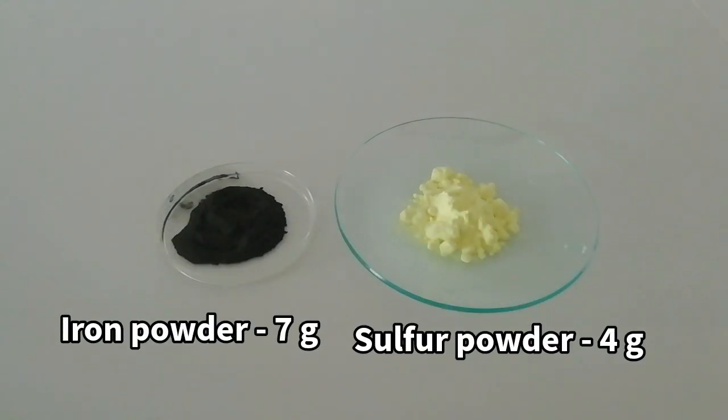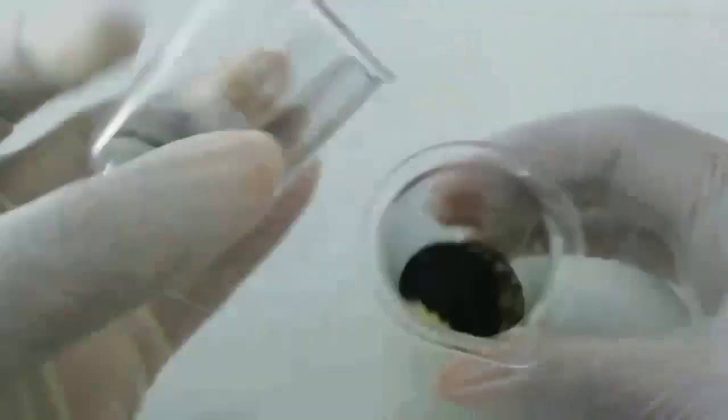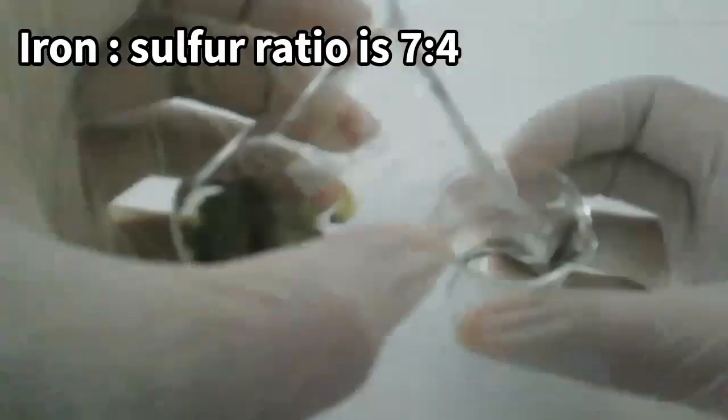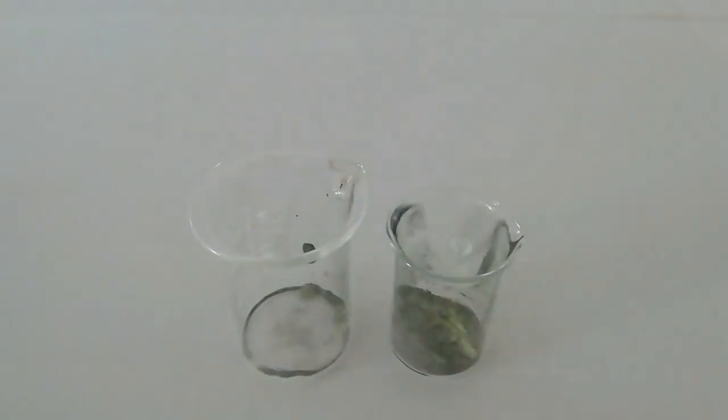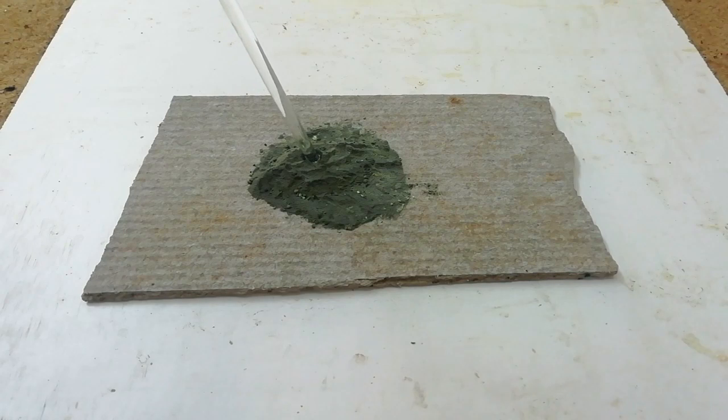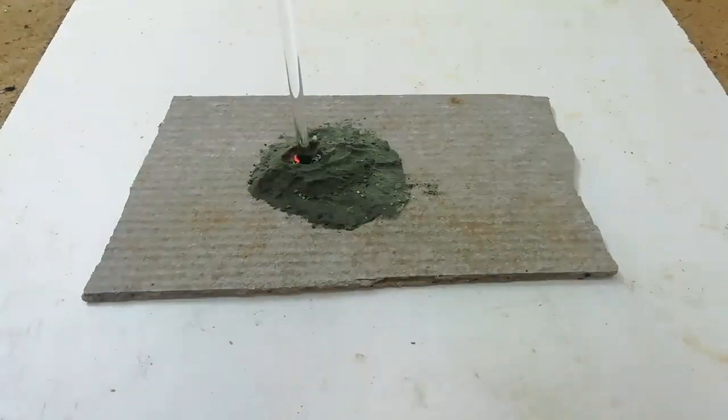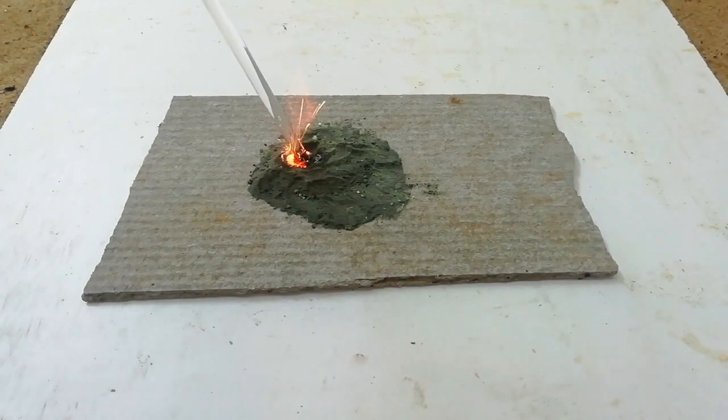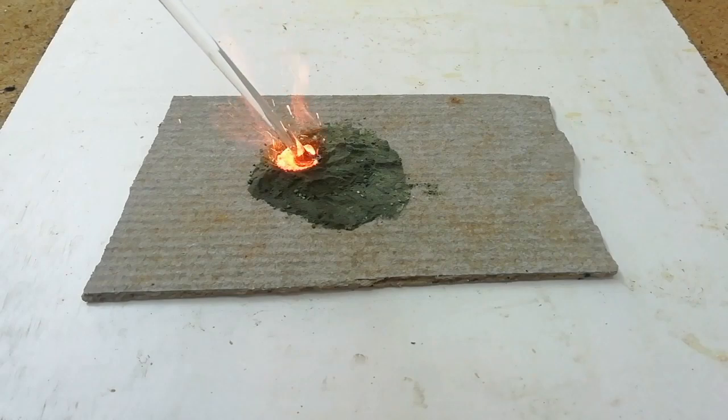For the reaction, 7 grams of iron powder and 4 grams of sulfur were mixed together. The next step is to ignite the mixture. For that, I placed the powder on an asbestos plate. We can't use a glass plate because that will explode during the experiment.